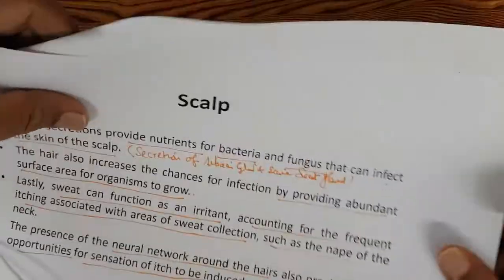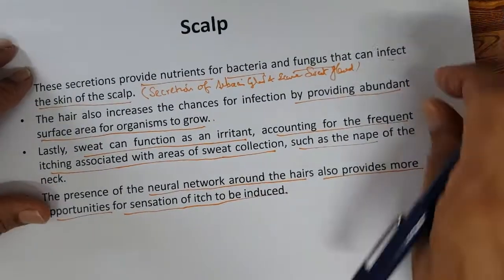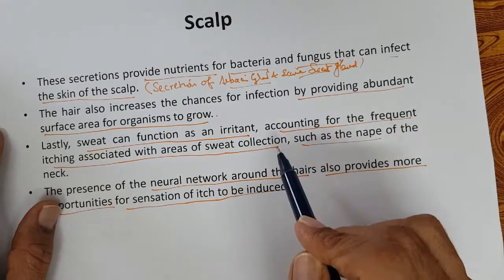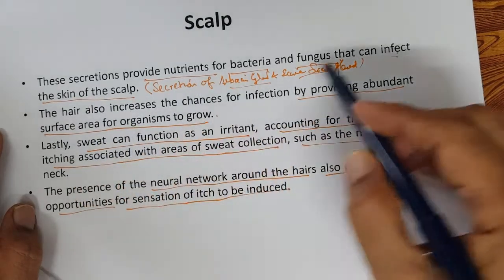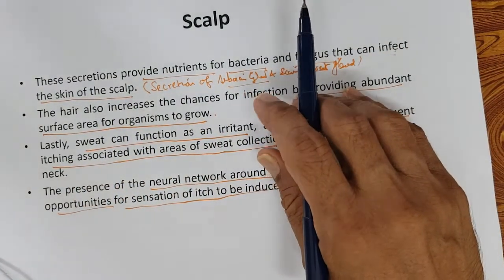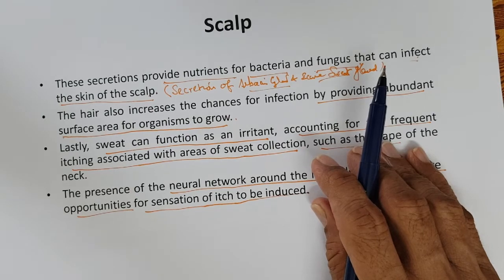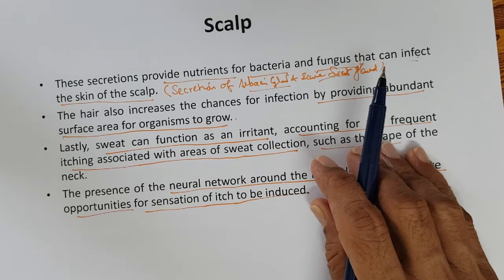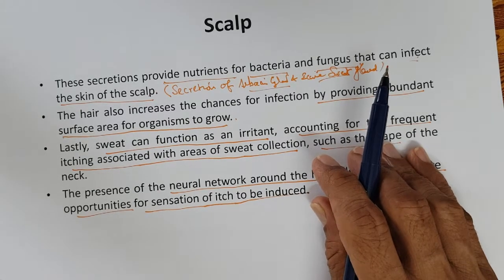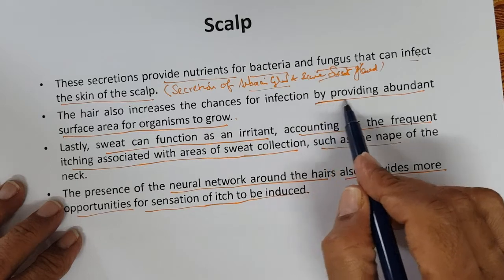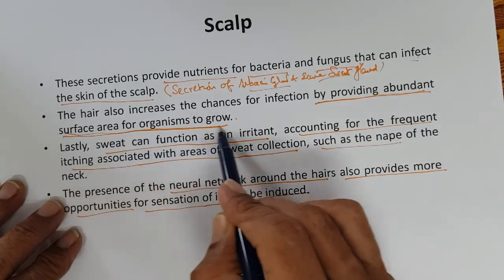The eccrine secretions and sebaceous gland secretions provide nutrients for bacteria and fungi that can infect the skin of the scalp. Every hair has sebaceous glands along with it, and apart from that there is the eccrine sweat gland that provides moisture. The fat and hair also increase the chance of infection by providing abundant surface area for organisms to grow.